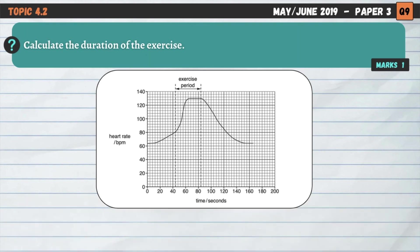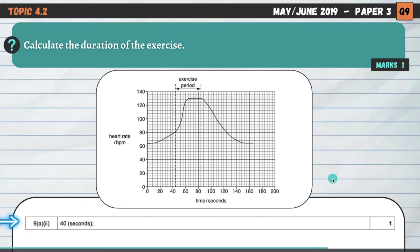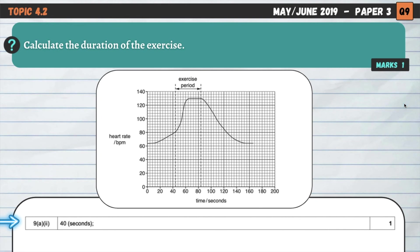Next question on the same graph: calculate the duration of the exercise. Duration means how long it goes on for. Here is the exercise period between the two dotted lines. Each box is also worth four seconds. Going from 44 seconds up to 84 seconds gives us a duration of 40 seconds. Take your time on these and make sure you're correct when working out the scale.